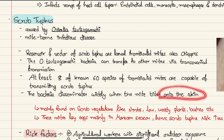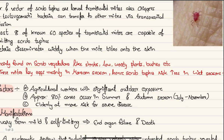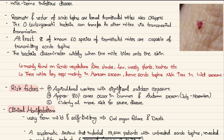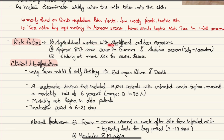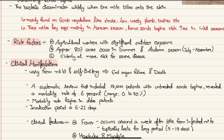When the mite bites, the bacteria disseminate widely onto the skin. These mites are mainly found on scrub vegetation like shrubs, low woody plants, and bushes, and they lay eggs usually in the monsoon season, so scrub typhus is more common in wet seasons. Risk factors include agricultural workers with significant outdoor exposure and army personnel in outdoor environments. Approximately 80% of cases occur in summer and autumn, between July and November, and elderly people are at higher risk of developing severe scrub typhus.